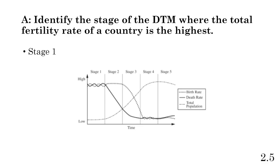Stage 1 is when the country is the least developed — it probably hasn't industrialized or had a medical revolution yet. Birth rates can be very high, but we also have a very high infant mortality rate and maternal mortality rate. The death rate is very high, and birth rates and death rates end up canceling each other out, so there's very little population growth. That's actually similar to Stage 5, where we again see very little — or even negative — population growth. Stage 4 is more static, similar to Stage 1 but without the decline seen in Stage 5.